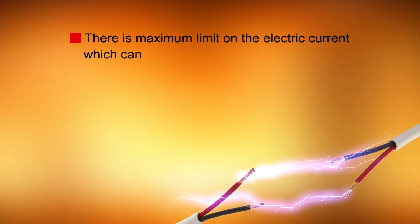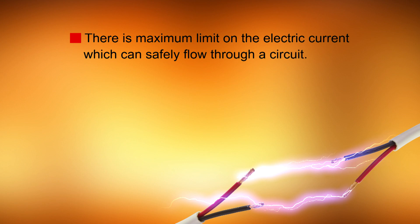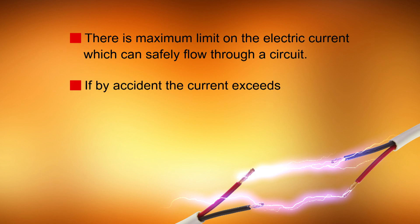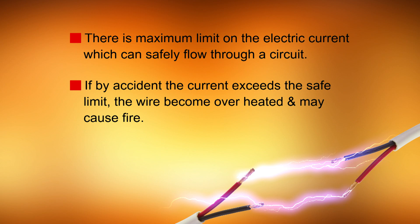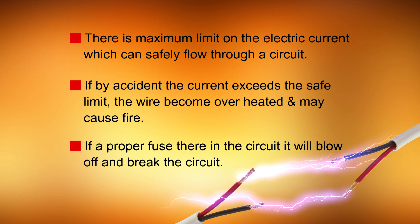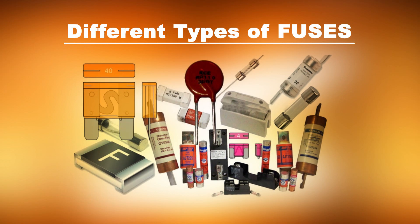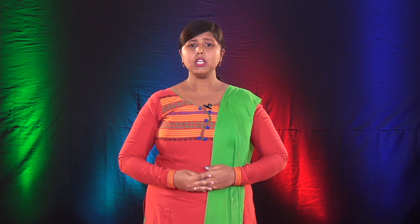Wires made from some special materials melt quickly and break when a large electric current passes through them. These wires are used for making electric fuses. In all buildings, fuses are inserted in all electric circuits. There is a maximum limit on the electric current which can safely flow through a circuit. If by accident the current exceeds this safe limit, the wires may become overheated and may cause fire. If a proper fuse is in the circuit, it will blow off and break the circuit. A fuse is thus a safety device which prevents damage to electrical circuits and possible fires.